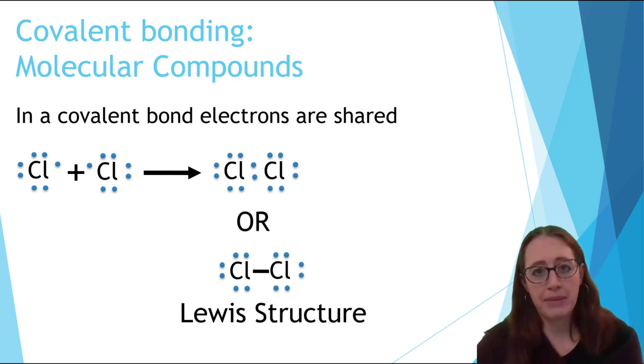Now let's think about what would happen if the atoms needed more than one electron. How could something like oxygen, which have six electrons, get a full octet through covalent bonding?